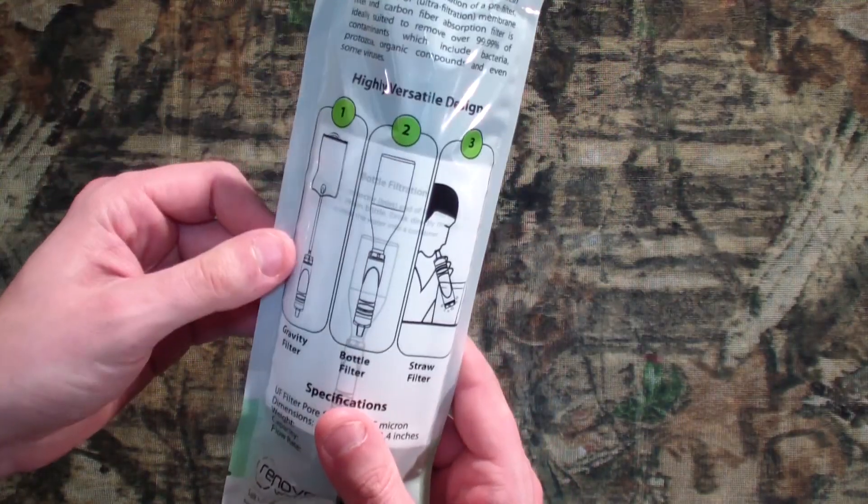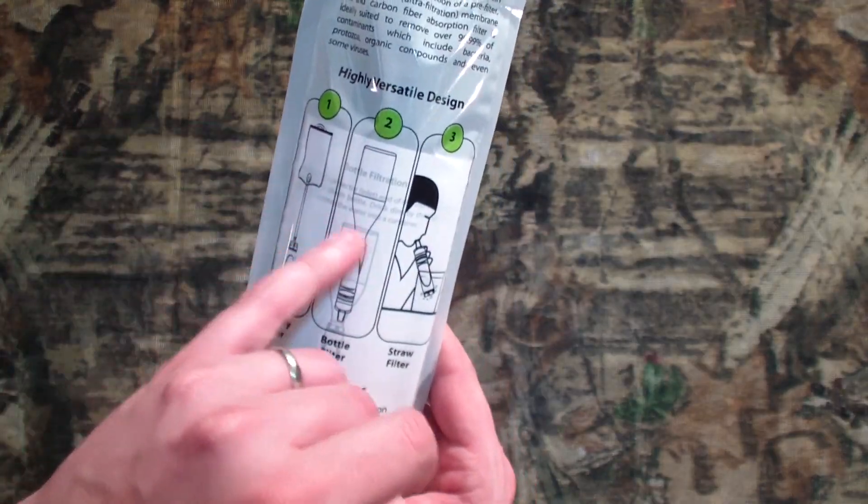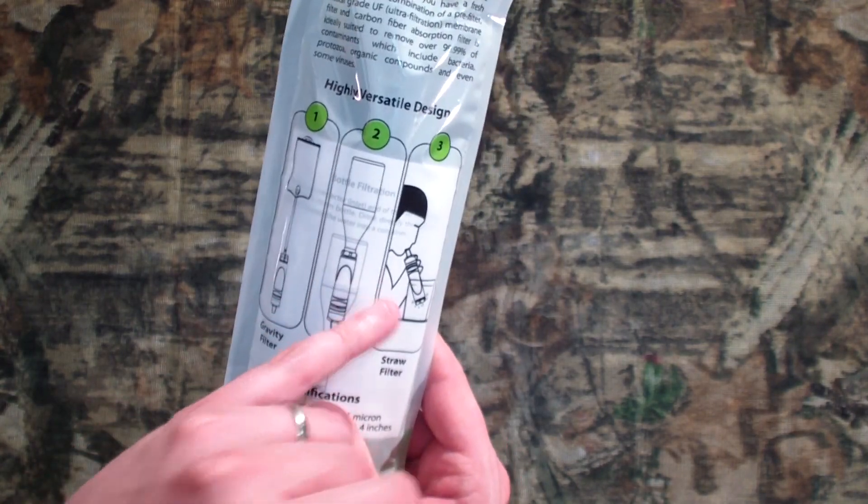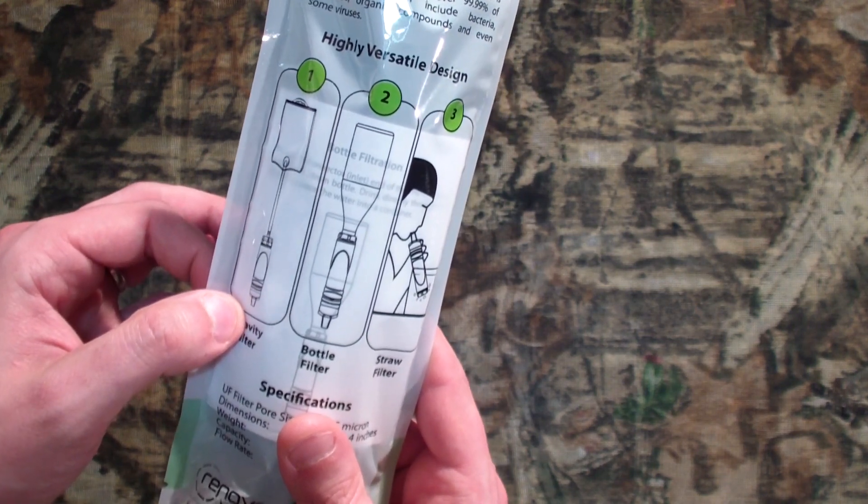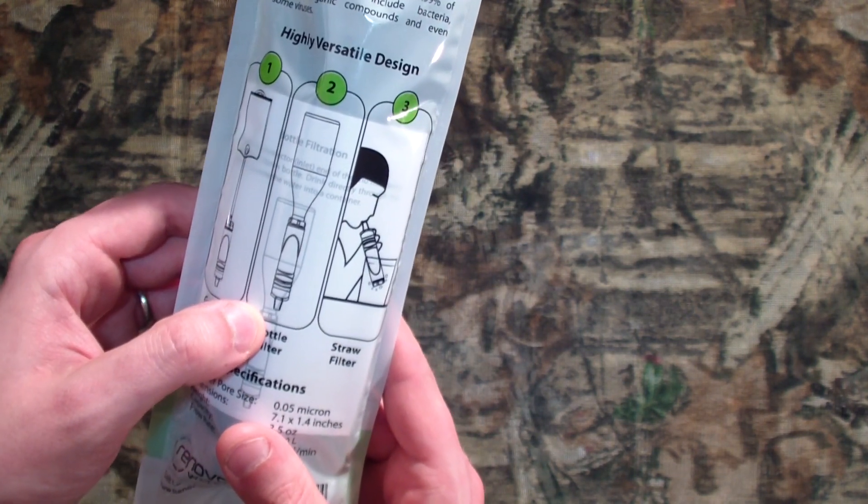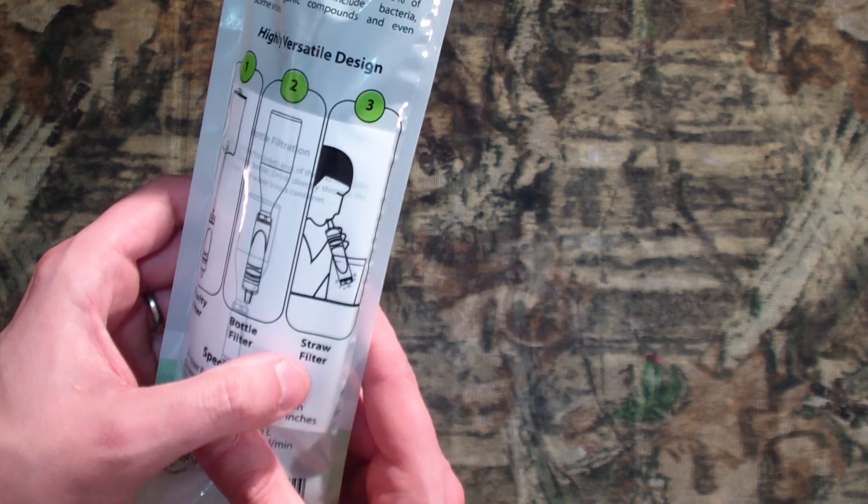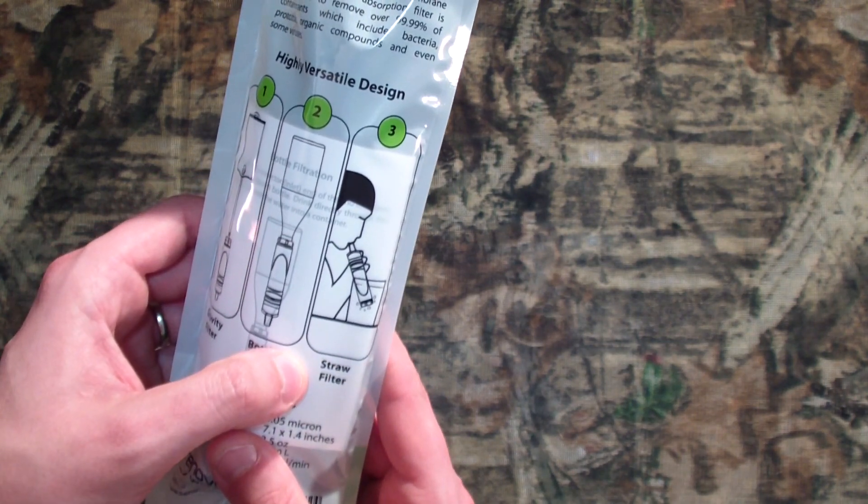So we're going to take a look at the package that I just took out of the mailbox and see what's going on. Oh, one, two, three. That's three different ways to use it. There's also three different types of filtration. But let's see the three different ways to use it: gravity, bottle, and straw filter. Kind of survival style.